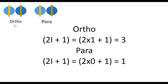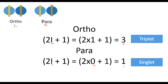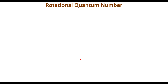For ortho, the nuclear spin I = 1. Substituting into the degeneracy formula 2I + 1, we get 2(1) + 1 = 3, so ortho hydrogen is a triplet state. For para, I = 0, giving 2(0) + 1 = 1, so para hydrogen is a singlet state. The rotational quantum number J has values of 0 and ±1.